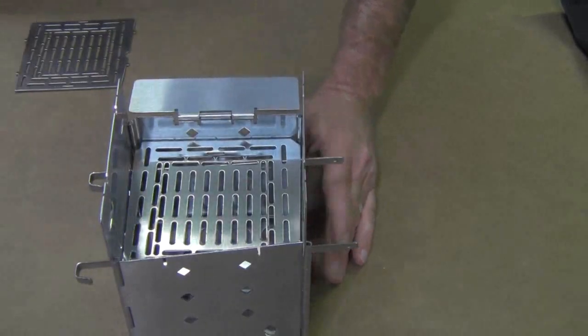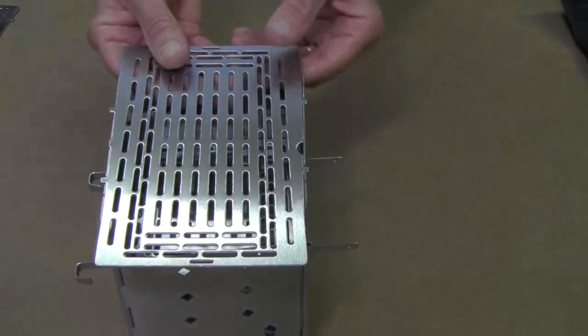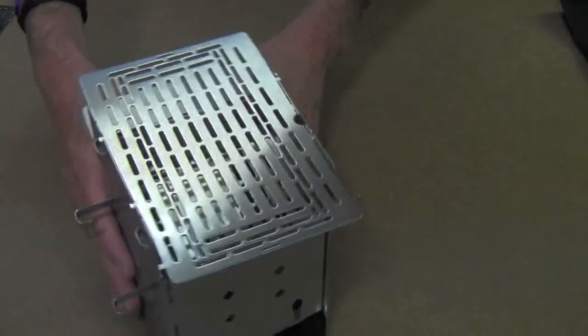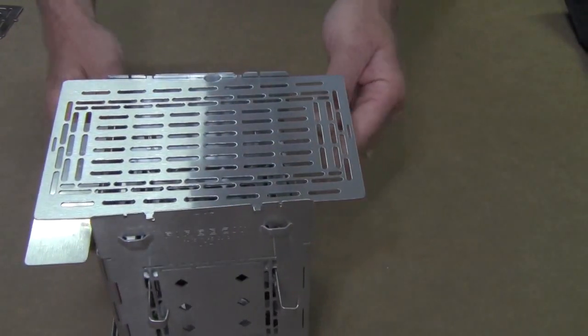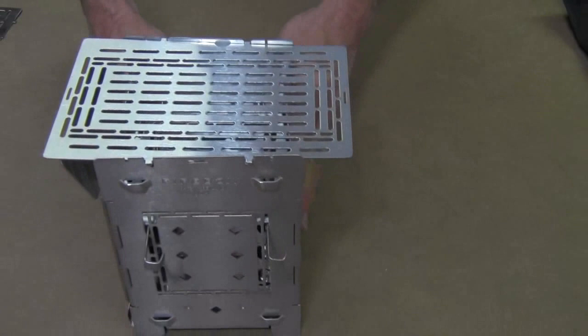And then you can put charcoal briquettes on there and use something like our extended grill plate. The extended grill plate is the same length as the firebox is tall so it fits right in with the firebox in its case or wherever you have it packed up.